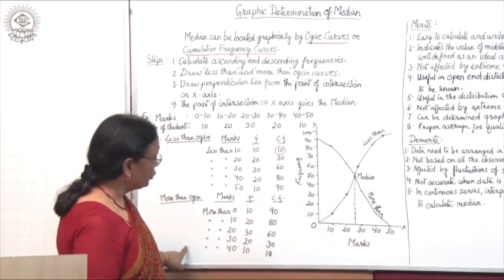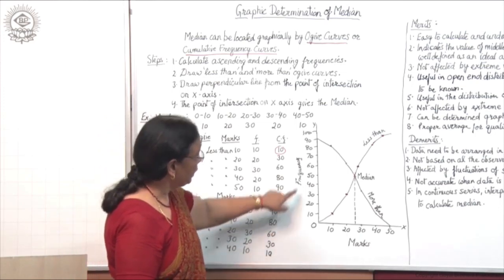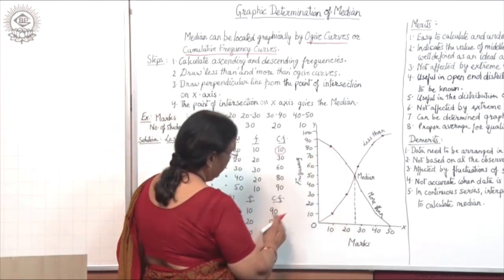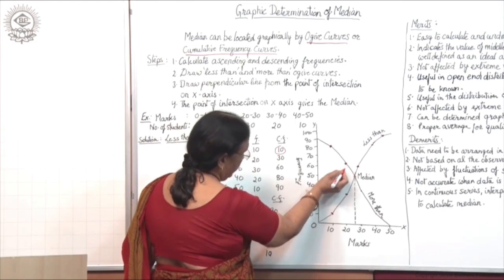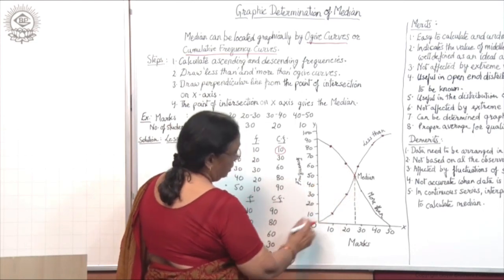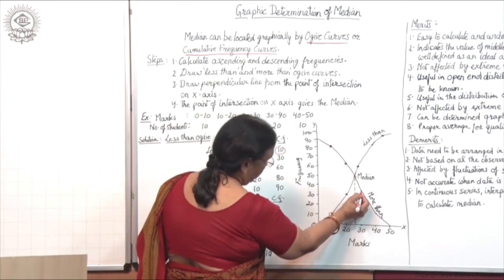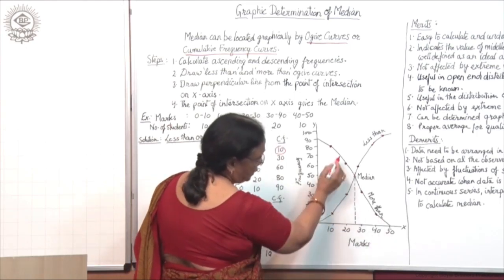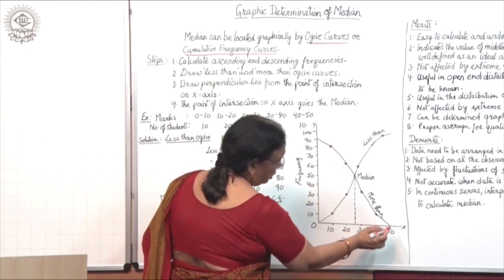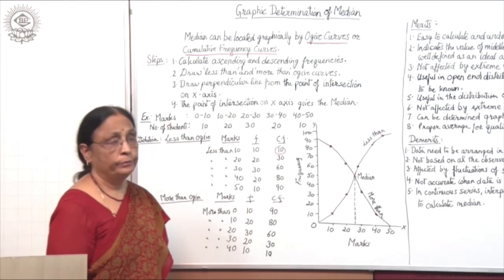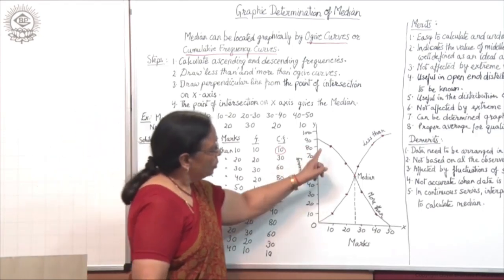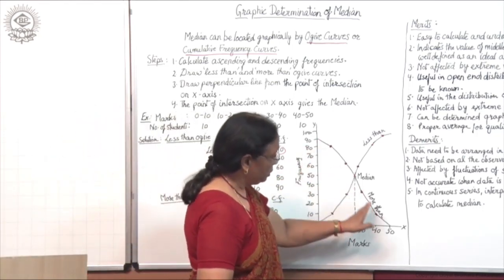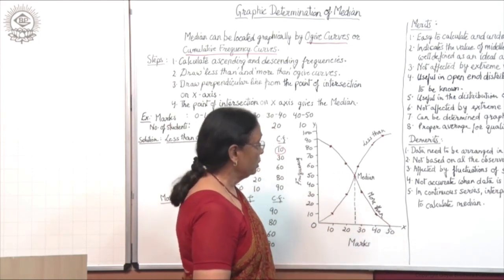Similarly, for the more than ojive, the first point is 90, second is 80, third is 60, fourth is 30, and the last is 10. Extend it to the X axis. After plotting these points, join them to get the more than ojive curve.